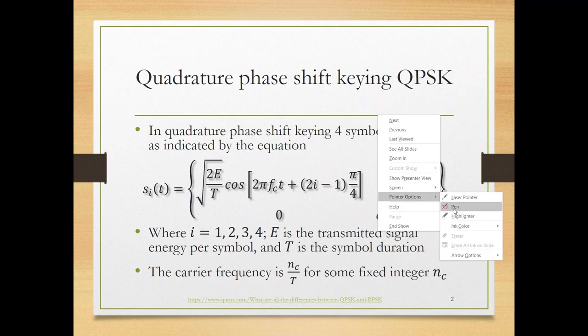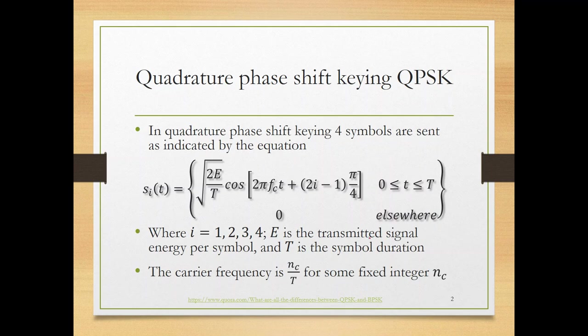Each symbol has a certain phase different from the others, defined over the period from 0 to T, where T is the duration of one symbol. The index i is an integer from 1 to 4, representing the constellation point. E is the transmitted signal energy per symbol and T is the symbol duration.